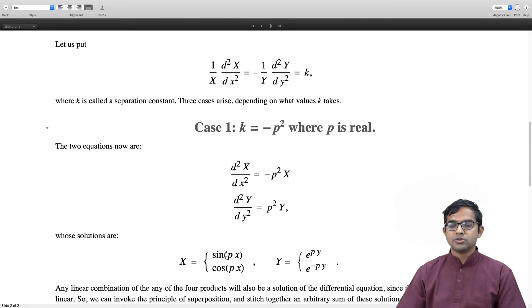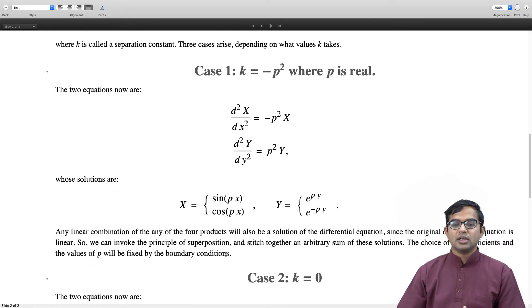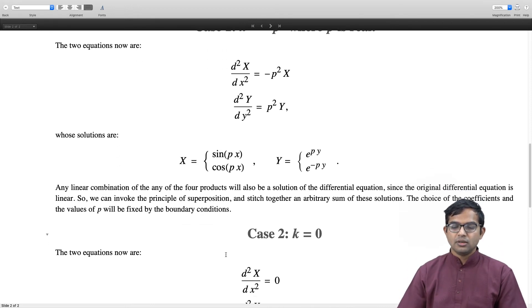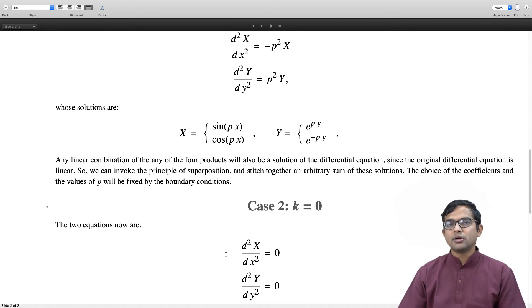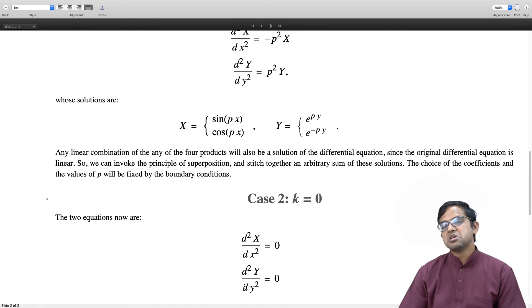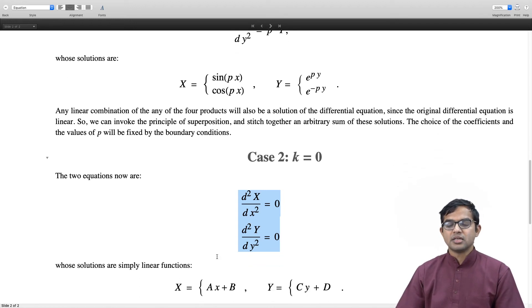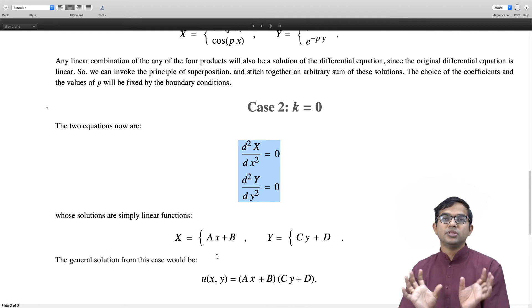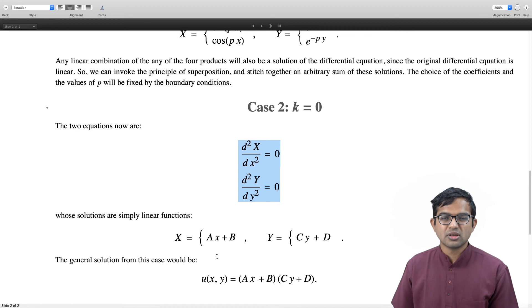The other case is when k = 0. If k equals 0, that is an in-between case where the differential equations are trivial: d²X/dx² = 0 and d²Y/dy² = 0. This is basically a 1D problem of the kind we already described. The answer is simply two straight lines: X = Ax + B and Y = Cy + D. The solution would be just a product of these two linear solutions. This finds application in very special circumstances.